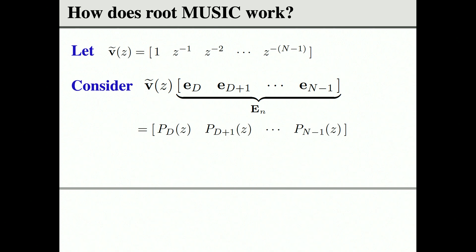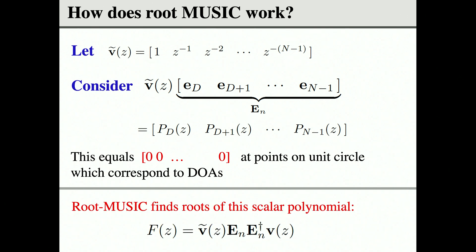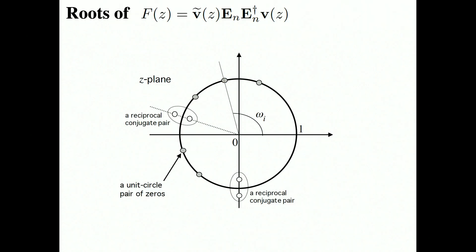In Root MUSIC, polynomials P_D, P_{D+1}, and so forth are defined. These polynomials all share zeros — they will all equal exactly zero at the points corresponding to the directions of arrival. For example, if there are five directions from which sources are coming — one from your aunt, one from your niece, one from your professor — all that information will be present at the points where the polynomials become zero. Root MUSIC basically finds the locations where those zeros are. The roots that sit right on the so-called unit circle tell you the directions of arrival in the z-plane.